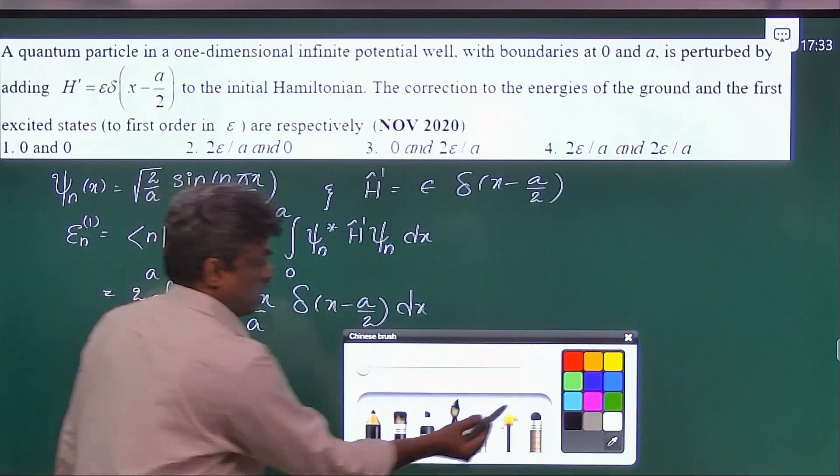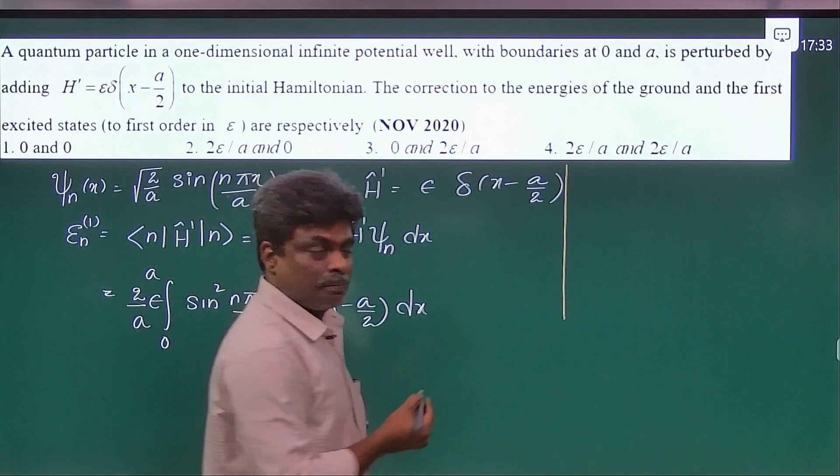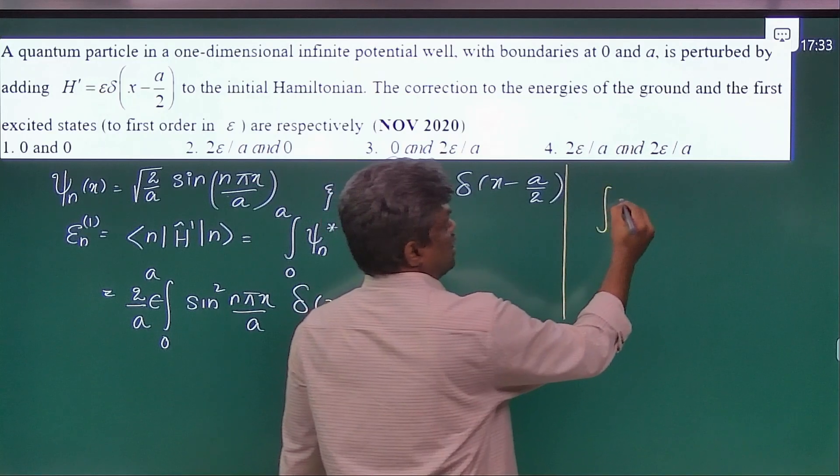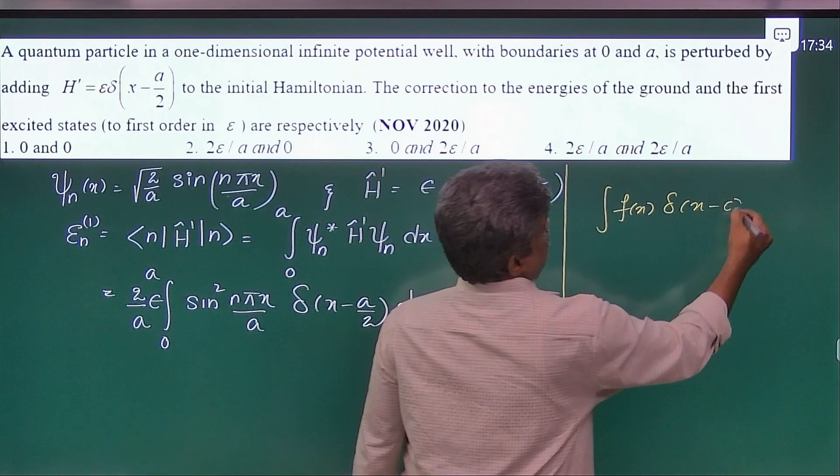And here we have one property of delta function. That is, you have an integral: f of x delta of x minus c dx.